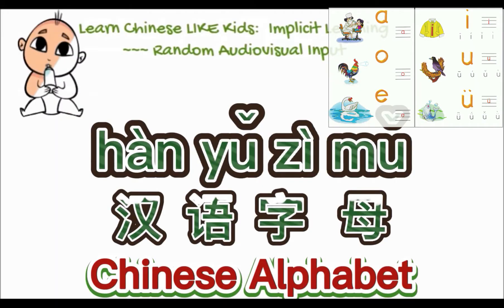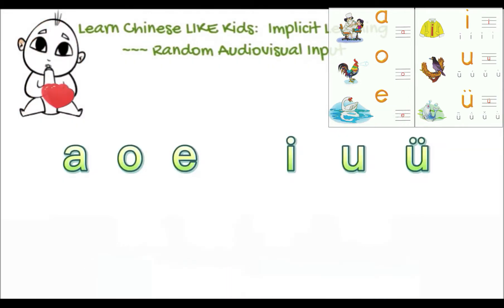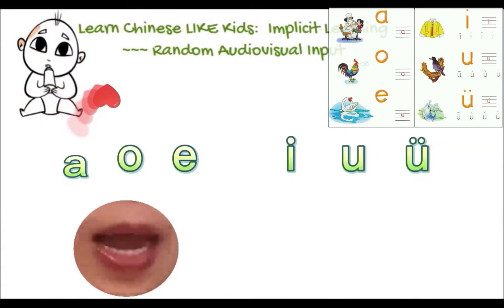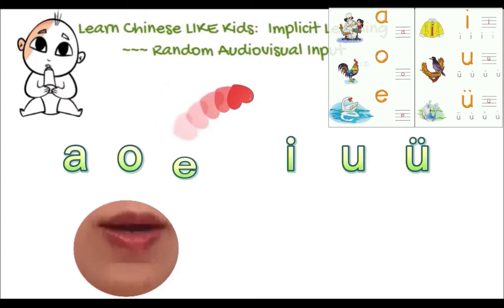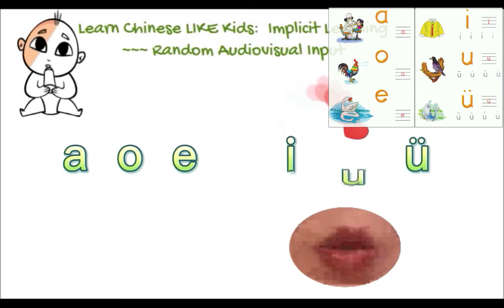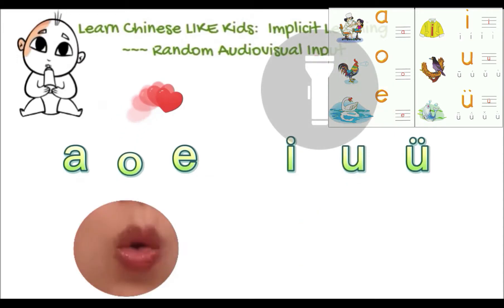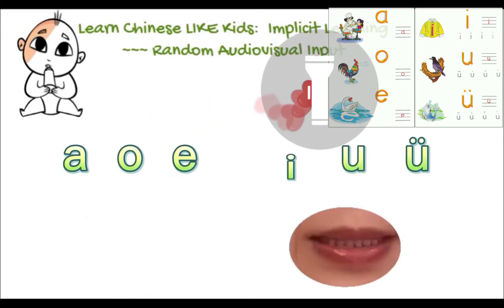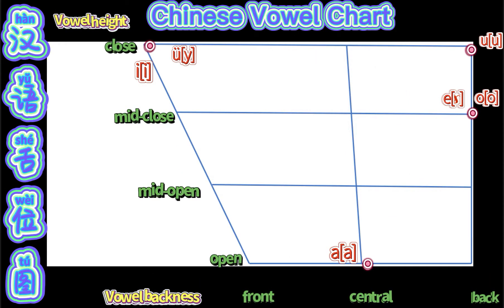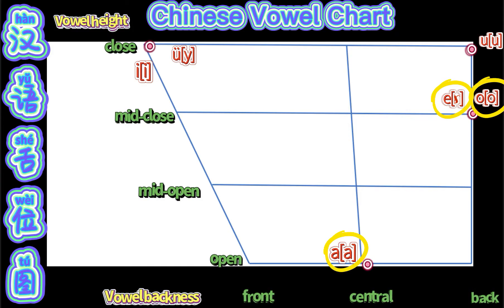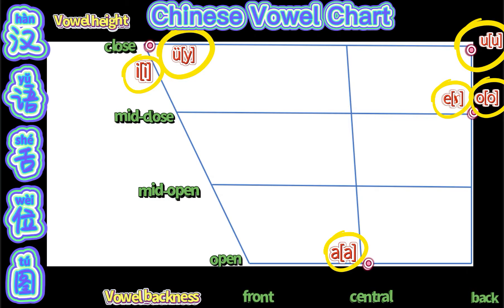The six Mandarin Chinese vowels are: 'a', 'o', 'e', 'yi', 'wu', 'yu'. The six simple vowel finals 'a', 'o', 'e', 'yi', 'wu', 'yu' are the most fundamental elements and the first thing to learn for each Mandarin Chinese learner. In addition to the six finals in alphabetical order, we will also present other four basic simple phonetic symbols.